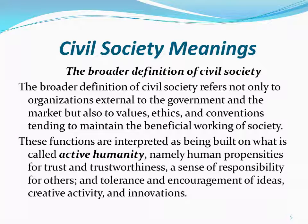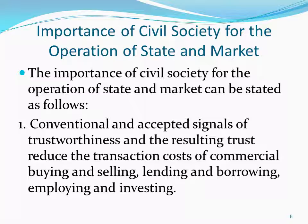The broader definition of civil society is used by Antonio Gramsci. It refers not only to organizations external to the government and the market, but also to values, ethics, and conventions tending to maintain the beneficial working of society. These functions are built on what is called active humanity — namely human propensities for trust and trustworthiness, a sense of responsibility for others, and tolerance and encouragement of ideas, creative activity, and innovations.